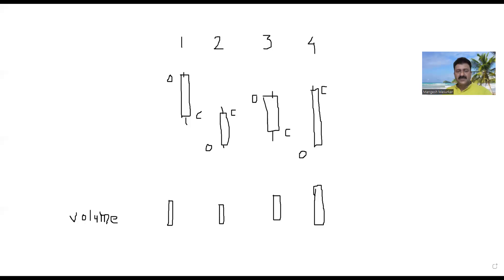I've drawn a sketch of candles for a brief introduction and then we'll go straight to charts. Now on the whiteboard: this is day one, day two, day three, and today is day four. Now look at the past three candles closely — open is on the left side and close is on the right-hand side. That indicates what the color of the candle would be.